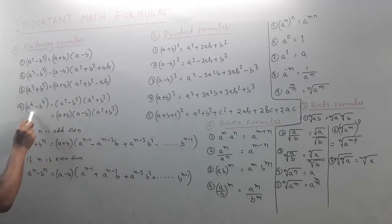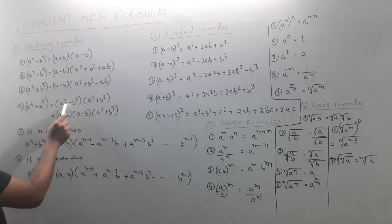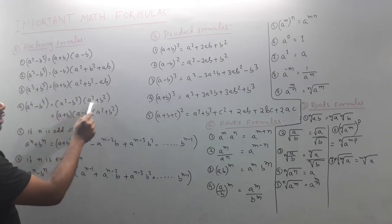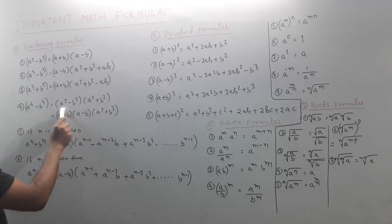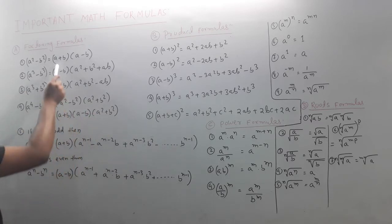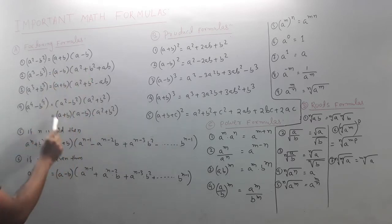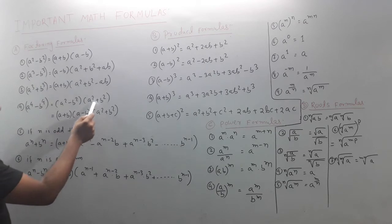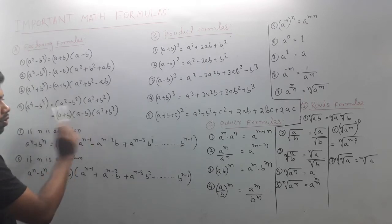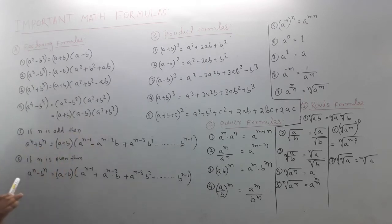Similarly, a⁴-b⁴. So now you can have (a²-b²)(a²+b²). A square minus B square equals A plus B into A minus B, and A square plus B square remains as it is.